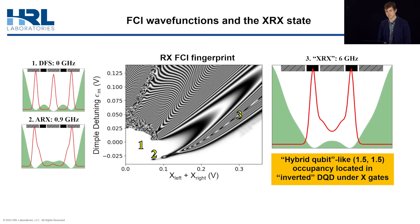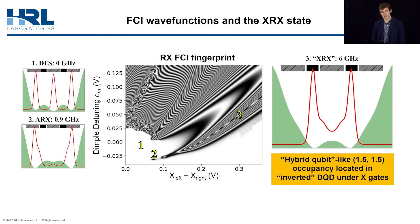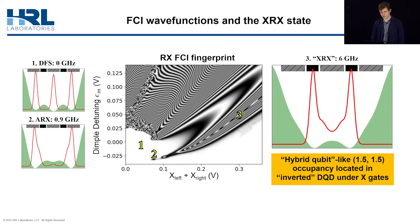On this slide, we have slices of the FCI potentials and densities for several locations on the RX fingerprint from the previous slide. In particular, DFS idle is labeled state one, ARX is labeled state two, and XRX is labeled state three. Looking at this density — which we can access easily with FCI in contrast to simpler models — we see that XRX occurs in a sort of inverted double quantum dot located underneath the barrier gates, a significantly different charge configuration compared to DFS.